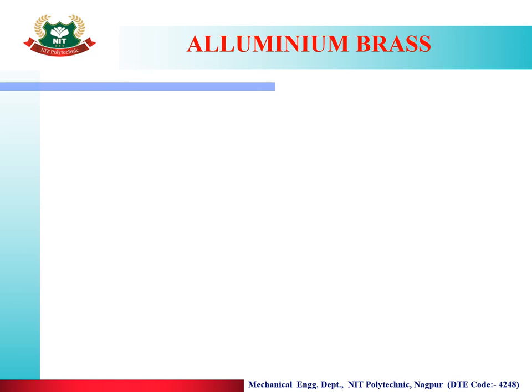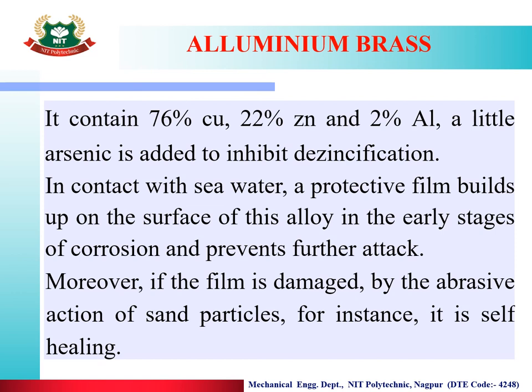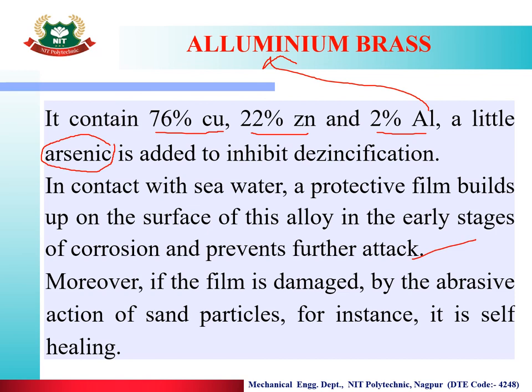The next brass is aluminium brass. Its composition is 76% copper, 22% zinc, 2% aluminium, and a small amount of arsenic. In contact with seawater, a protective film builds up on the surface of this alloy in the early stages of corrosion, preventing further attack. Moreover, if the film is damaged by the abrasive action of sand particles, it is self-healing.